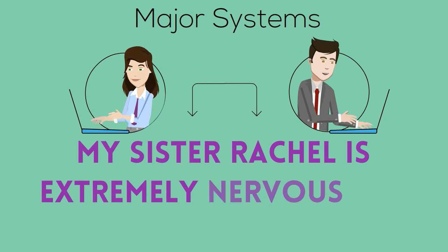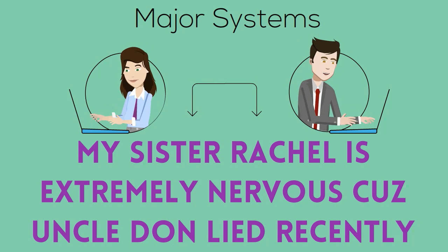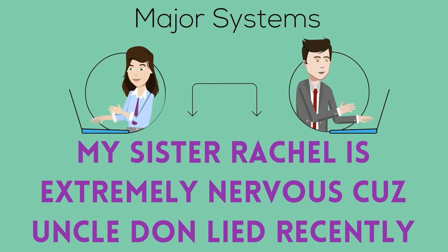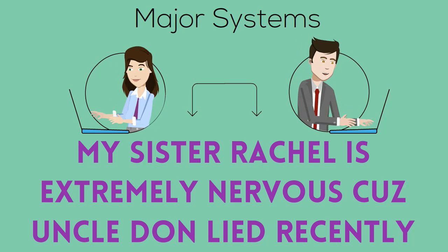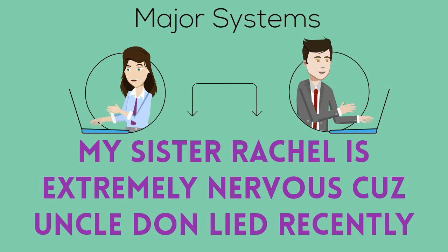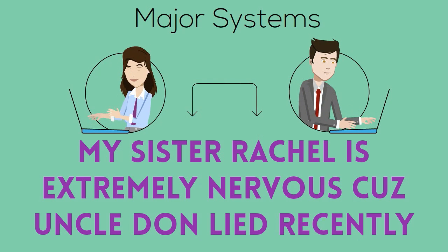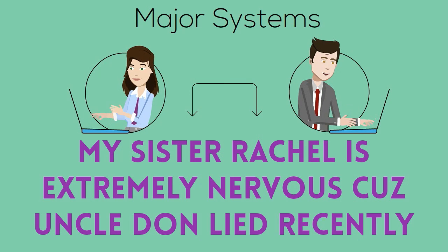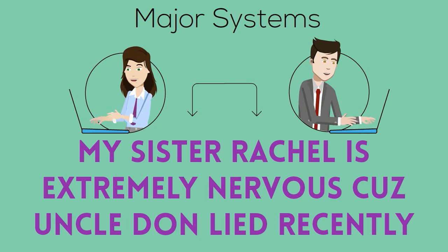The M is Muscular, the S is Skeleton, Rachel is Reproductive, the I is Integumentary, the E is Endocrine, Nervous is Nervous, the C is Circulatory, the U is Urinary, Don is Digestive, L is Lymphatic, and Recently is Respiratory. So there are two mnemonic devices to help you remember the major organ systems of the human body.